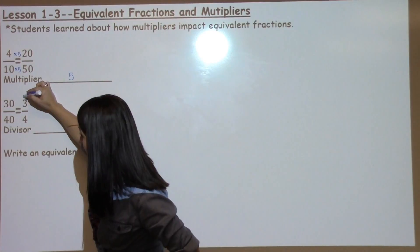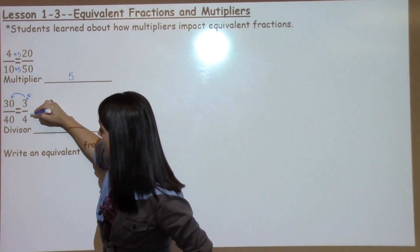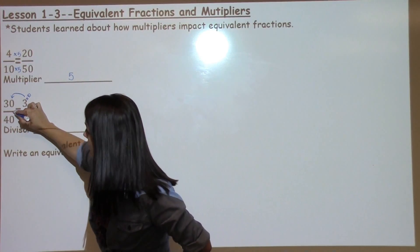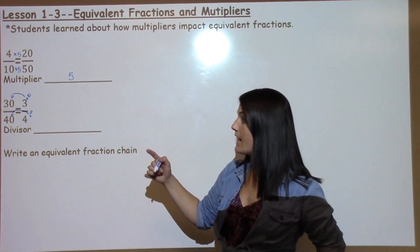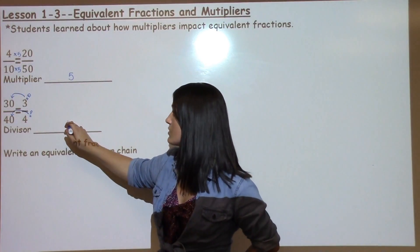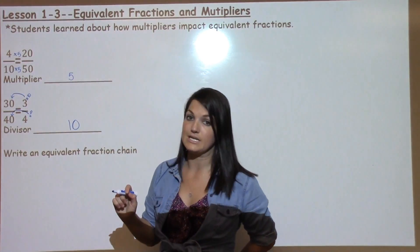So if you think 3 times 10 gives me 30, and 4 times 10 gives me 40, then 40 divided by 10 would give you 4, and 30 divided by 10 would give you 3. So your divisor is 10.